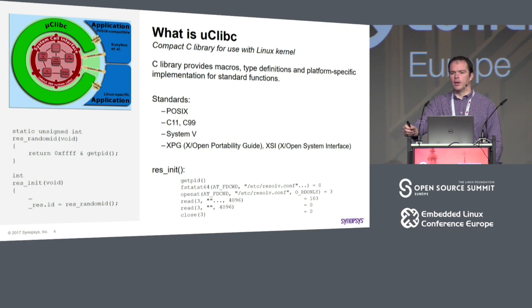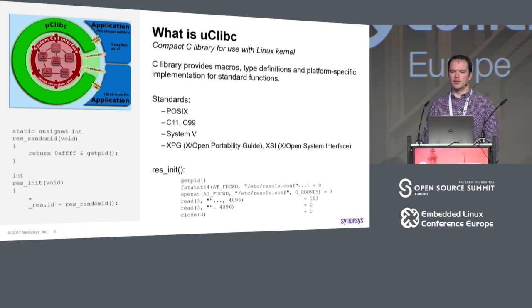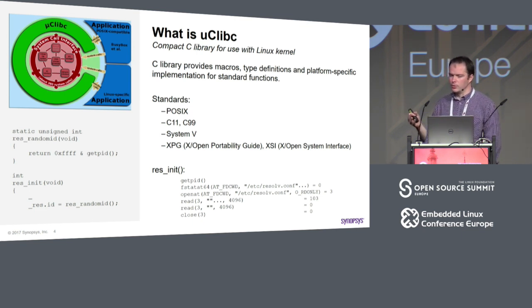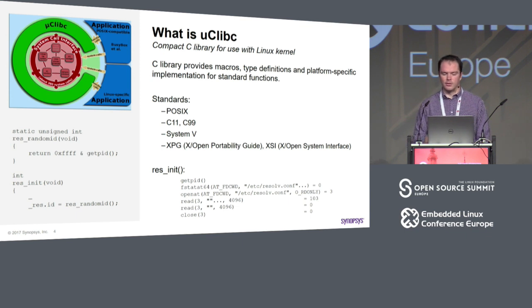It is important to have platform support because a C library sits in between userspace applications and the Linux kernel, and talks to the kernel through system calls, which in turn could be initiated through an interrupt or exception. This means the C library needs to know a lot about kernel ABI and specifics of your platform. uClibc provides wrappers for system calls so applications don't need to know a lot about the specifics of the kernel.